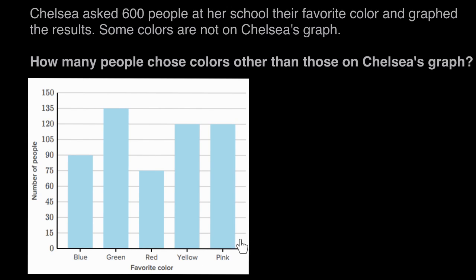Here's Chelsea's graph — she made a bar graph and listed some favorite colors: blue, green, red, yellow, and pink, and graphed people who had those favorite colors.